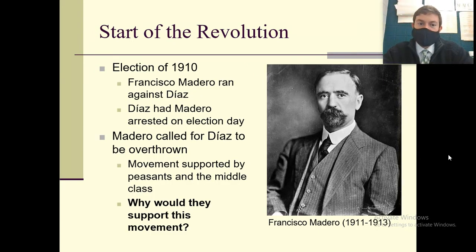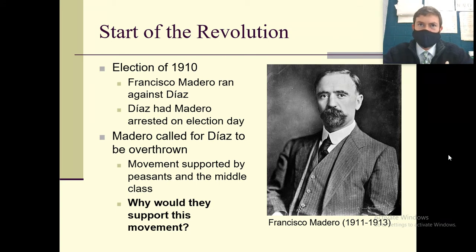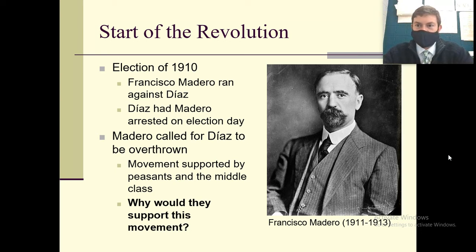So here's the start of the revolution. You have a guy named Francisco Madero who ran against Díaz to become president. Díaz had Madero arrested on election day. To put this in modern context, it'd be like if Obama locked up McCain or if Trump locked up Biden during the elections. Díaz was making sure he was going to win by locking up his opponent. Madero called for Díaz to be overthrown — he called for revolt and revolution — and the movement was supported by the peasants and the middle class.